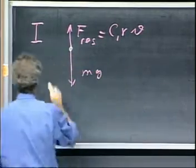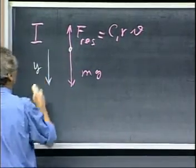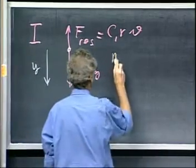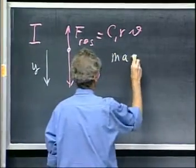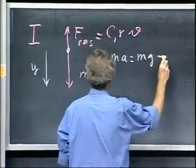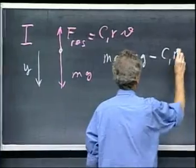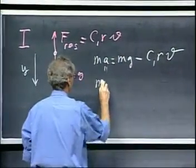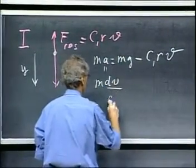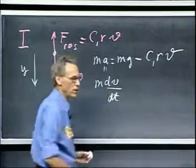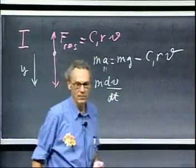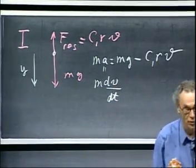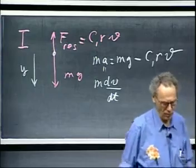If I call this the increasing value of y, Newton's second law gives me: MA equals mg minus C1R times V, and this equals M dV/dt. So I have a differential equation in V, and that can be solved — you're going to solve it on your assignment number four.